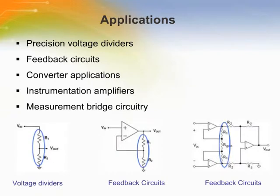The stability and accuracy over time and temperature of the ACAS family makes it ideally suited for precision voltage dividers, feedback circuits, and converter applications. Furthermore, these resistor chip arrays are ideal for instrumentation amplifiers and precision bridge circuits with demanding requirements for stable fixed resistor ratios.